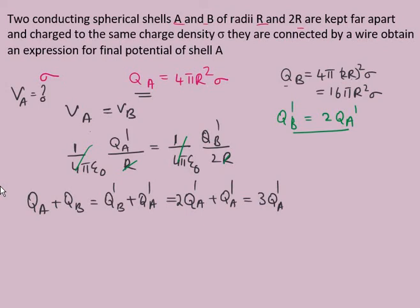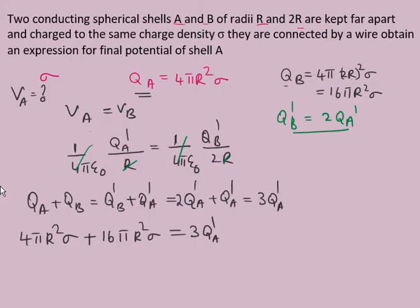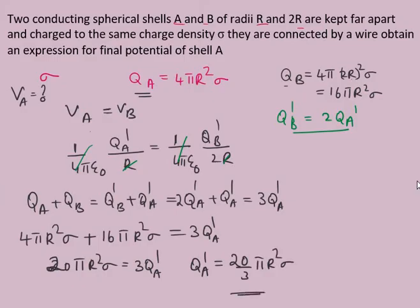The value of QA is 4πR²σ and QB is 16πR²σ, so QA + QB = 20πR²σ. Therefore 3QA' = 20πR²σ, giving QA' = (20/3)πR²σ. We have now found the redistributed charge on shell A.